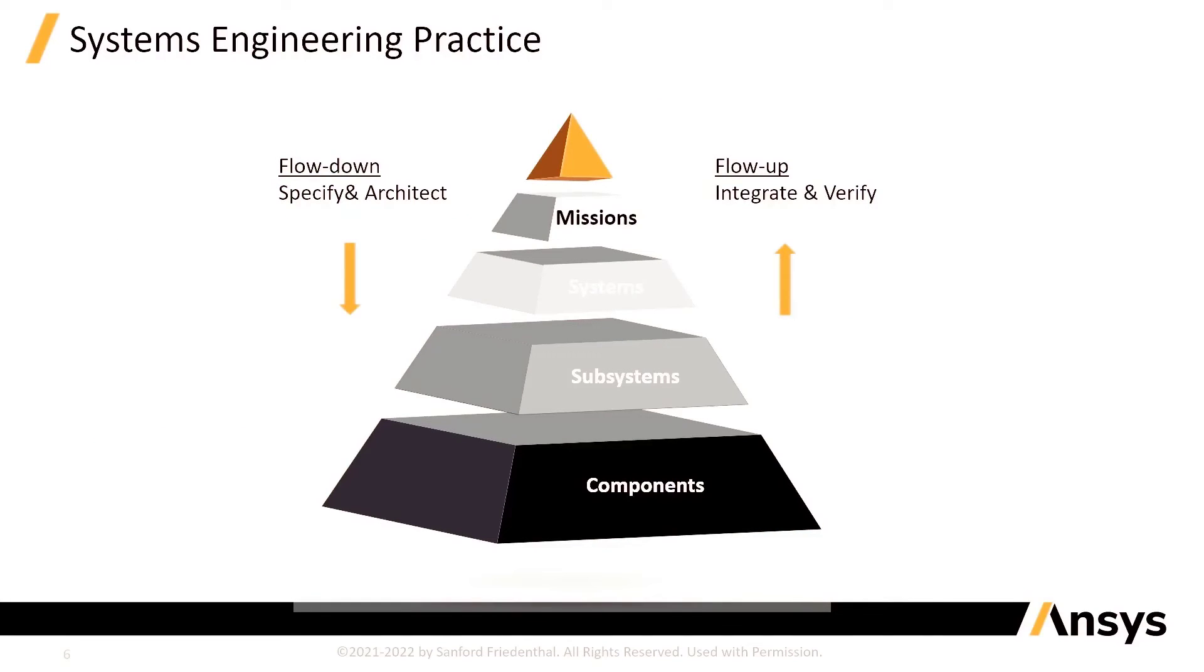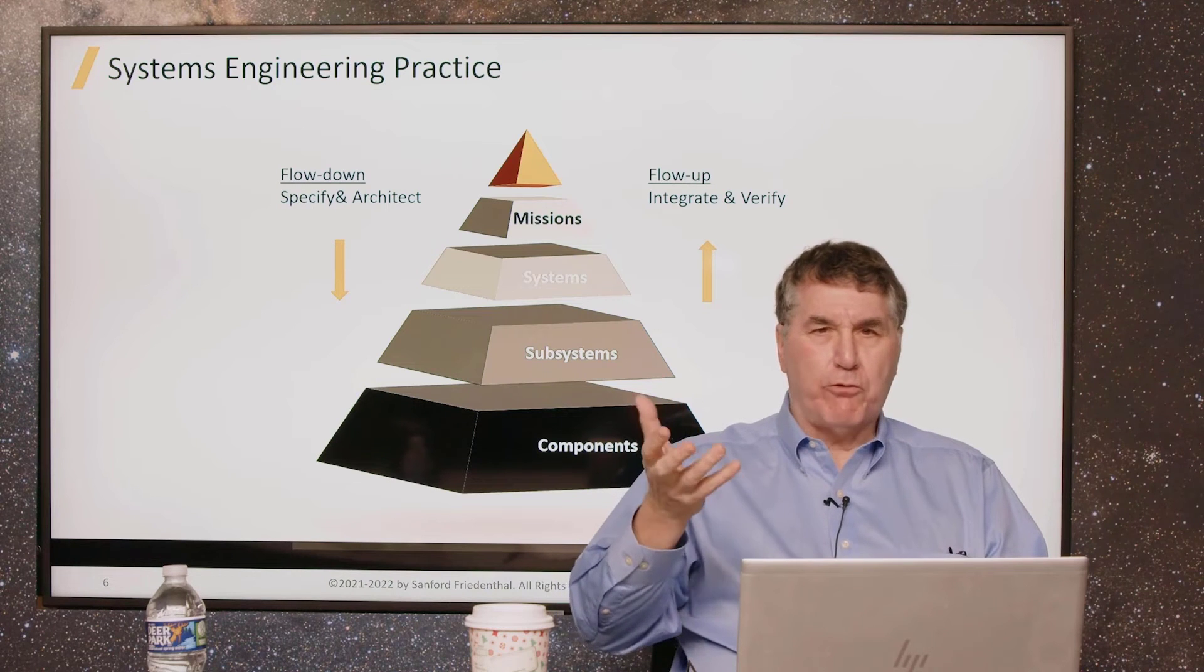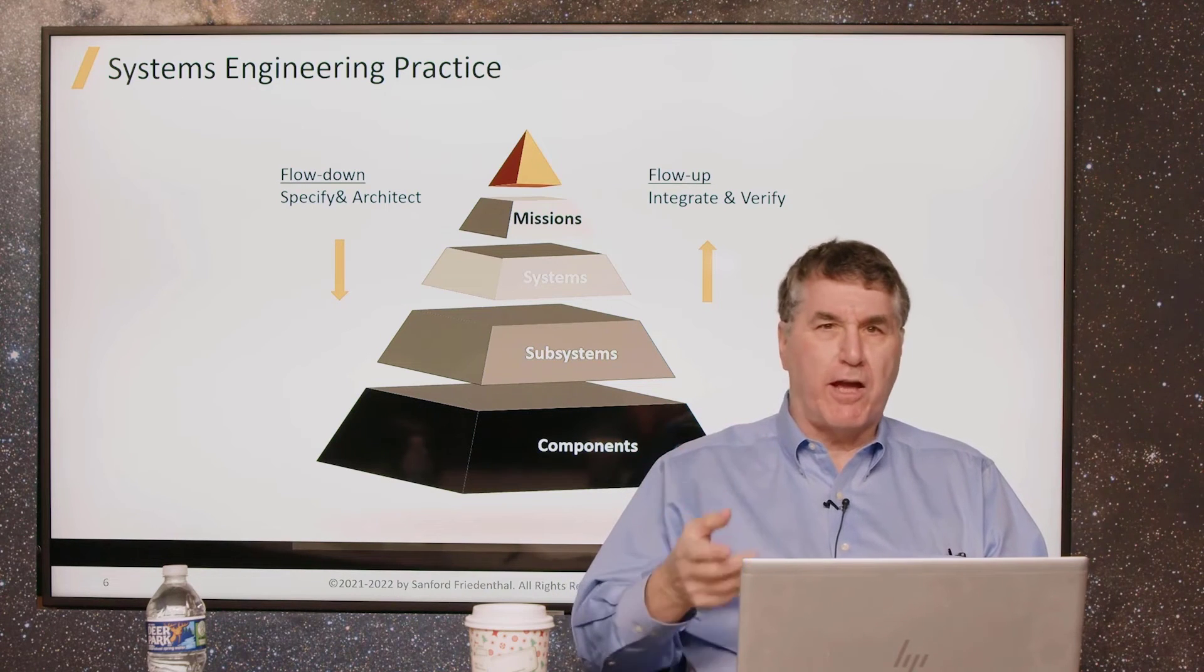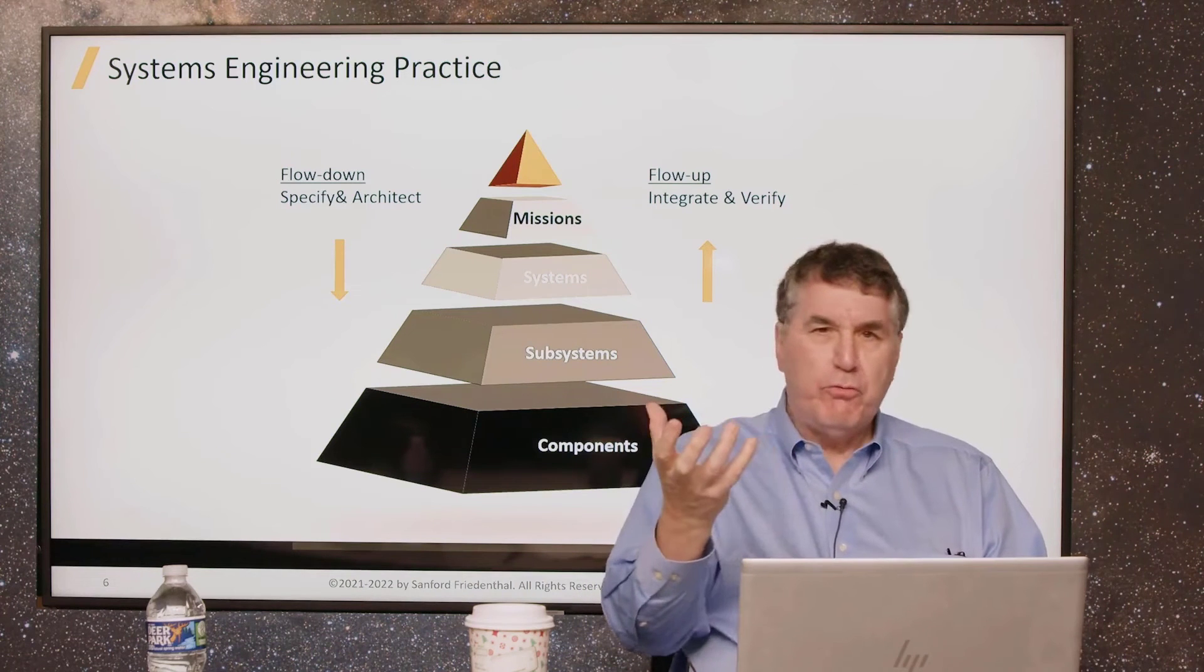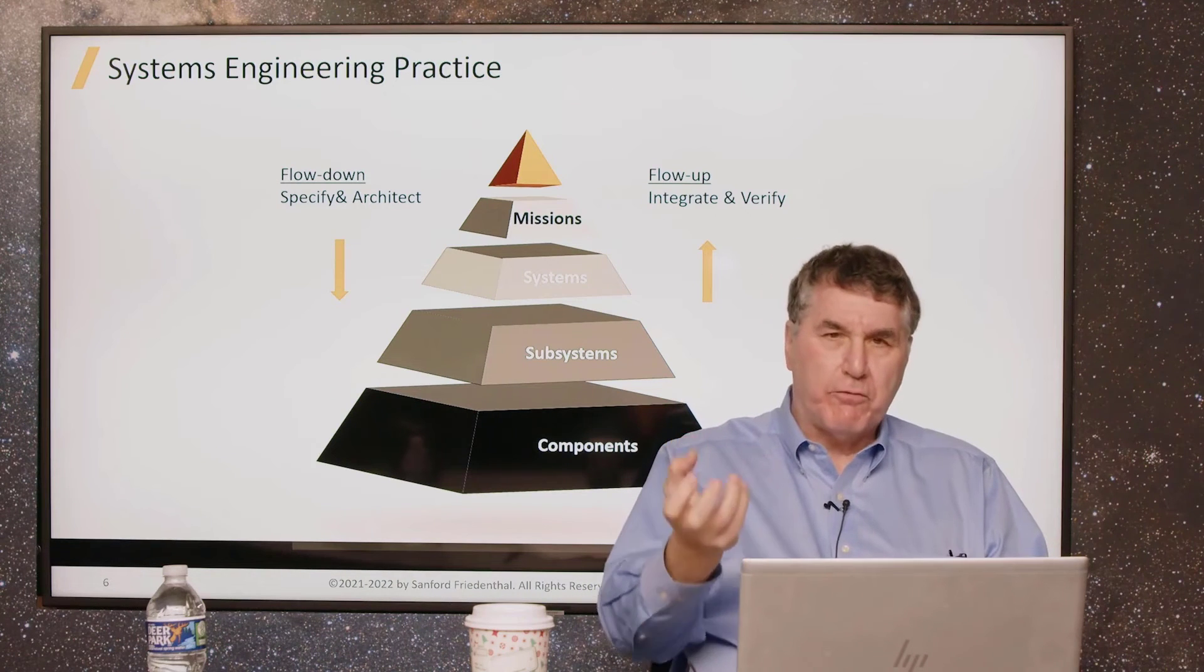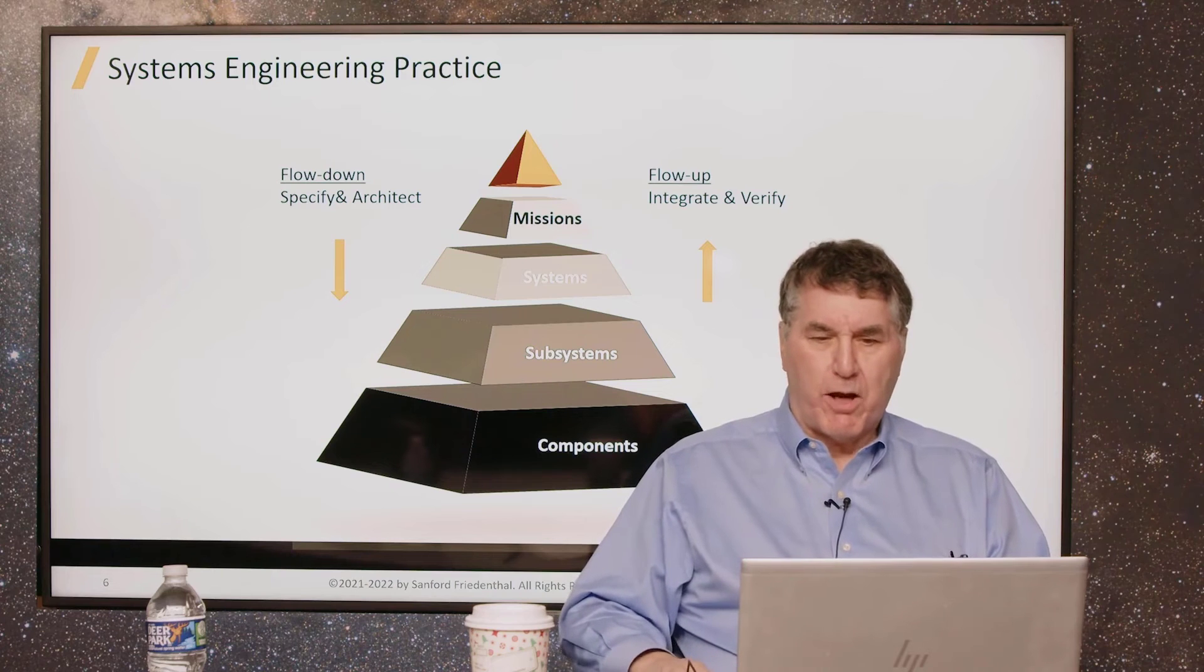In order to achieve that value, systems engineering has a traditional set of practices. At the most fundamental level, the key aspect of systems engineering is this notion of flow down and flow up. We flow requirements down from a higher level to a lower level and to the next lower level. As we do this, we synthesize design options, derive new design alternatives, and flow requirements down through this process.